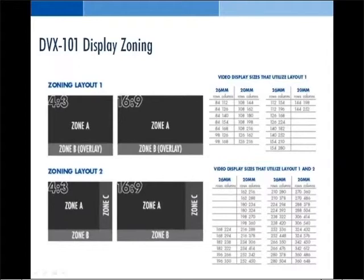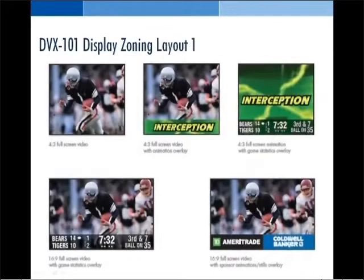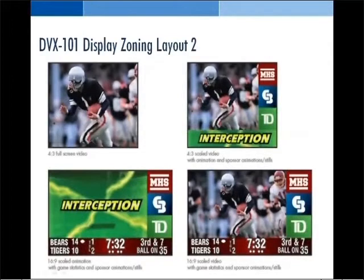When you create content in Content Studio or go to Display Items from Display Studio, these other zones will be available for you based on your display size. Here are examples of Zoning Layout 1, and examples based on Zoning Layout 2 with a bottom bar, a sidebar on the right-hand side, and live video surrounding it.